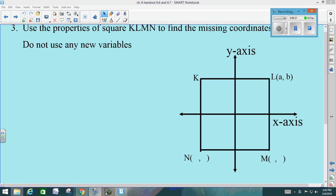KLMN is a square on the x and y axis, and we know that L is located at A,B. Properties of squares, what do we know about squares? Four right angles, what else do we know? Good, four congruent sides, and we know a ton more, but we're just going to go with that.